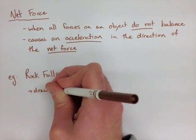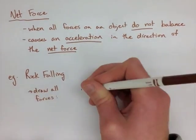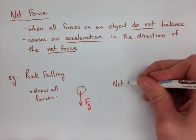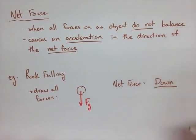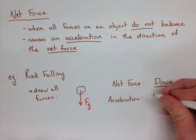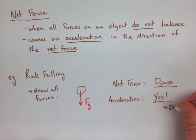Our first example, we're looking at a rock falling. First, we want to draw all the forces on the rock. So, we've drawn a little rock here, if you want to make it a square, you can. Notice that the only thing that's acting on the rock is gravity. This makes us have a net force and acceleration in the downward direction.